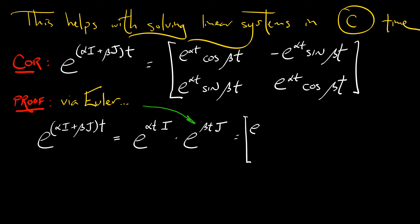The first term is exponentiating a diagonal matrix. That's no big deal. You get the matrix e to the alpha T, 0, 0, e to the alpha T. The second one, by the Euler formula, gives us cosine beta T, sine beta T, minus sine beta T, cosine beta T. Multiply those together, and you're done. No problem.